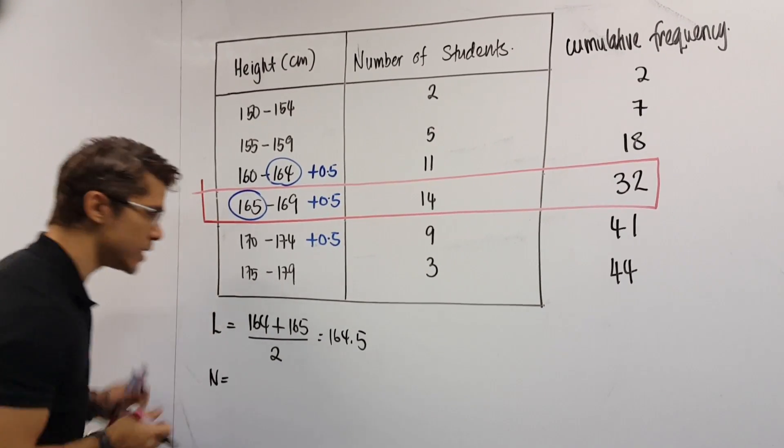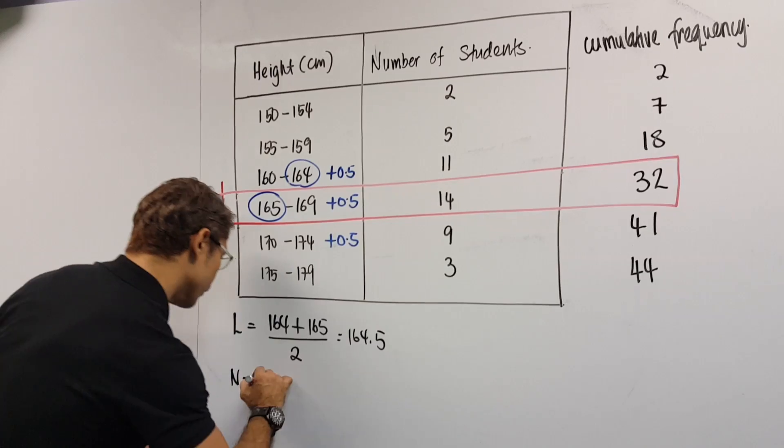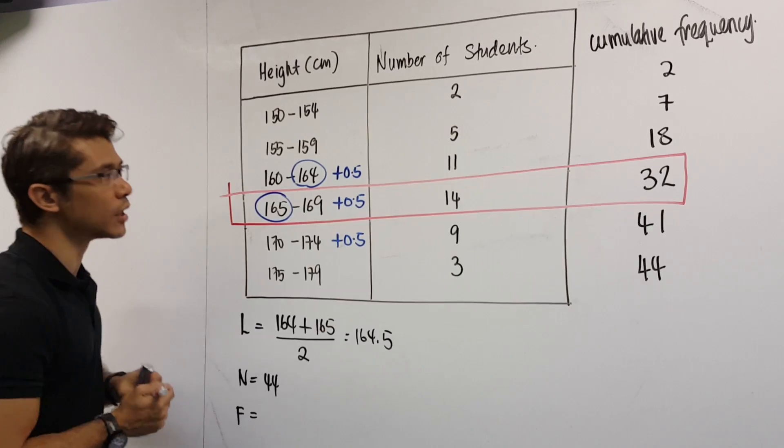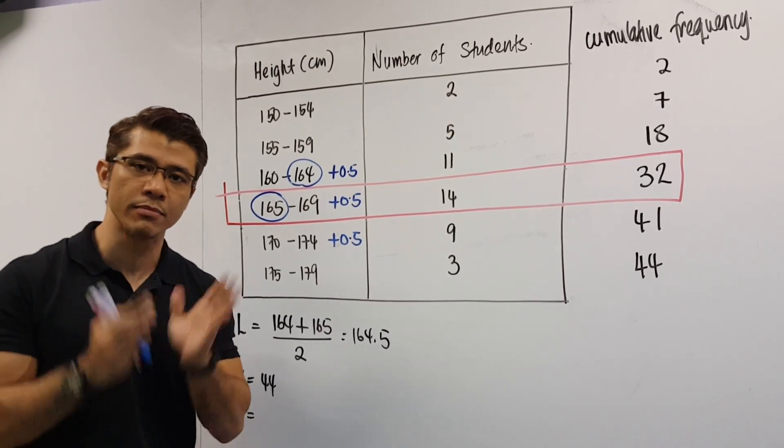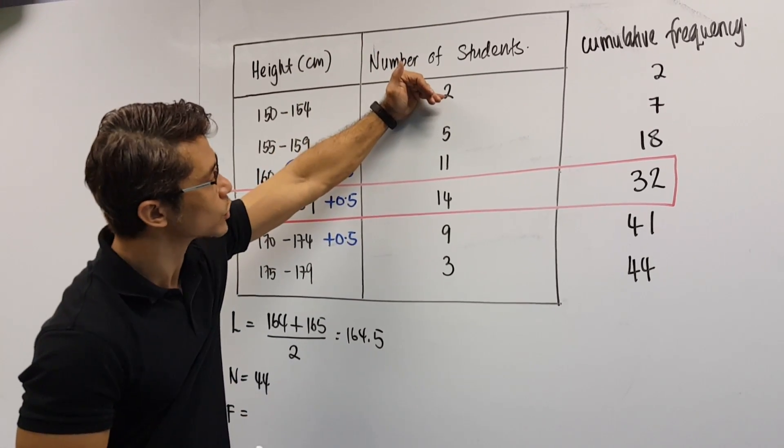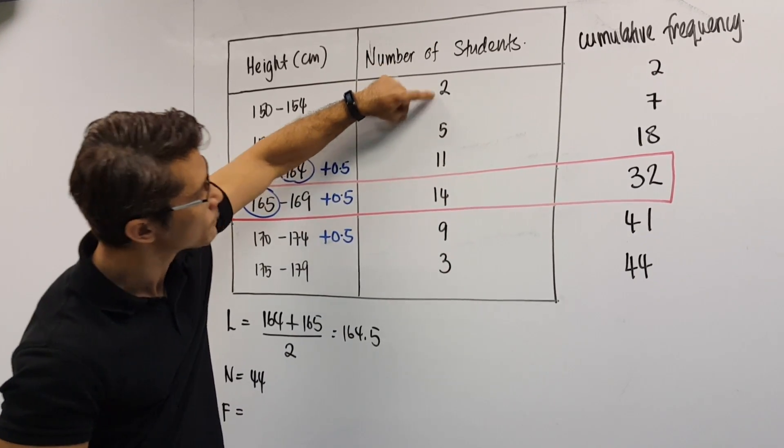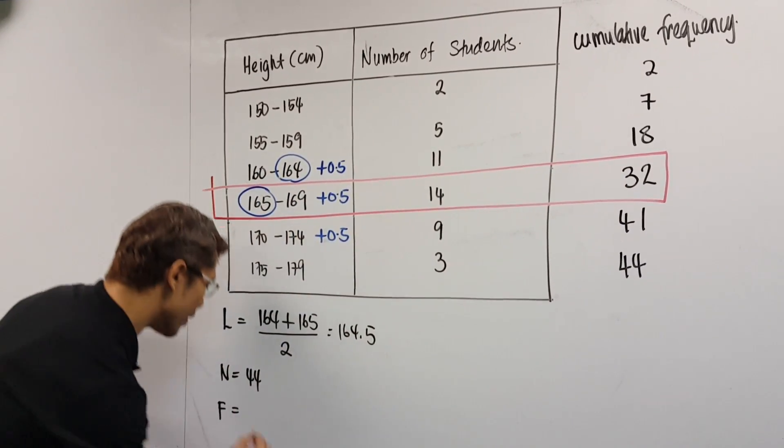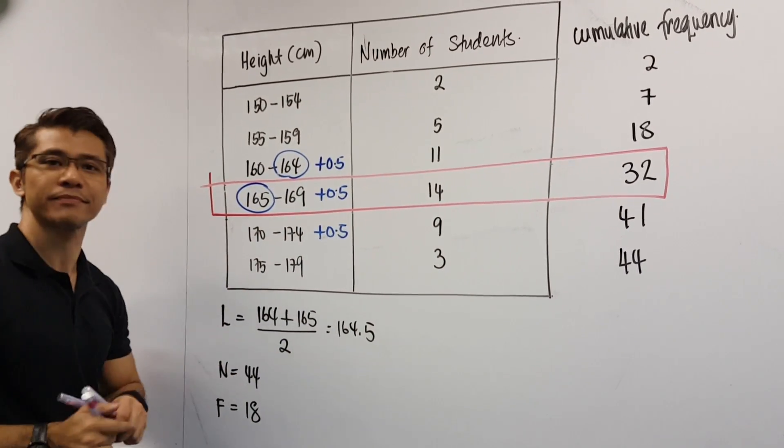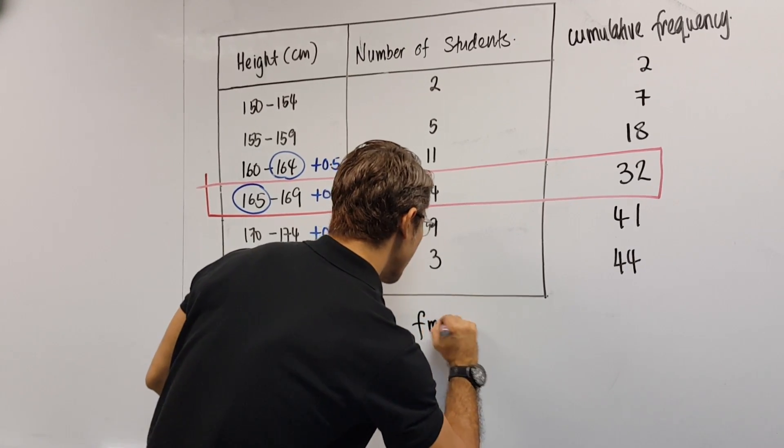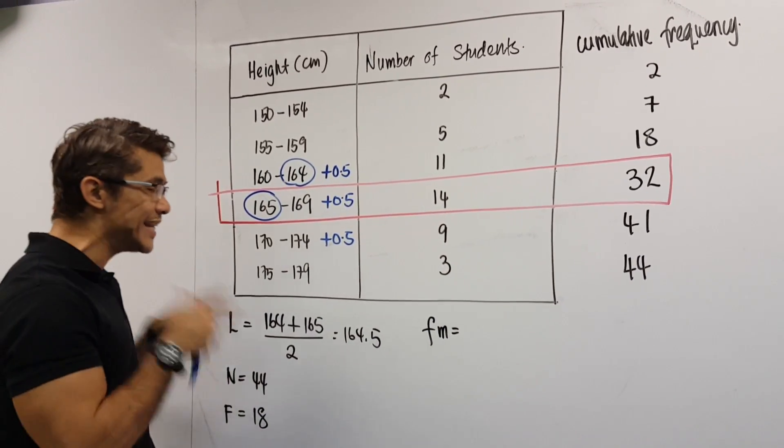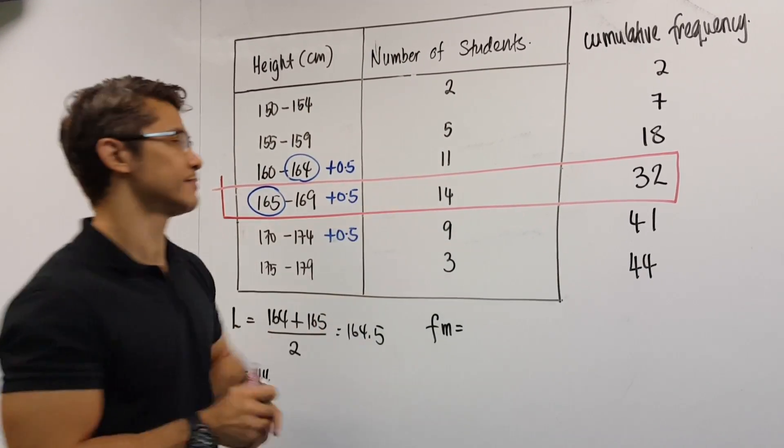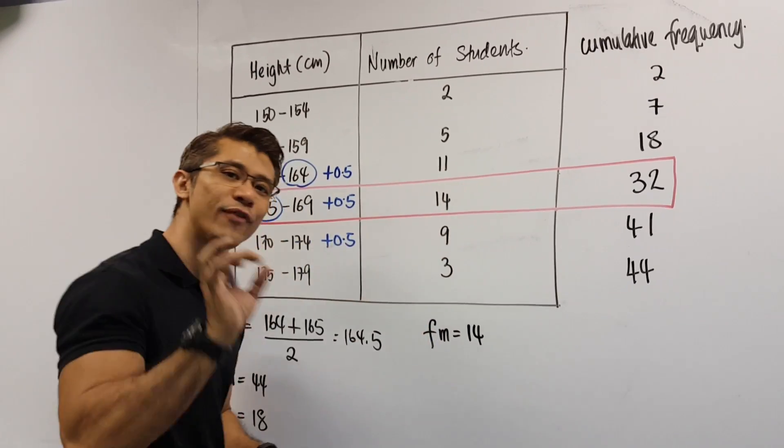Now, the N number, total frequency I know is 44. So, 44. We have F. F is the total frequency above the box. Now, remember, it's frequency. So, frequency, the total above this box, 2 plus 5 plus 11. That gives us 18. So F number is 18. Then, we have fn. What is fn again? Frequency inside the box. So this is my box. The frequency inside the box is 14. So I write 14.